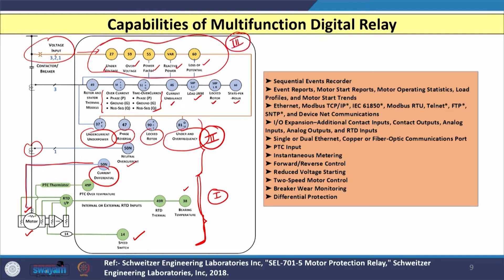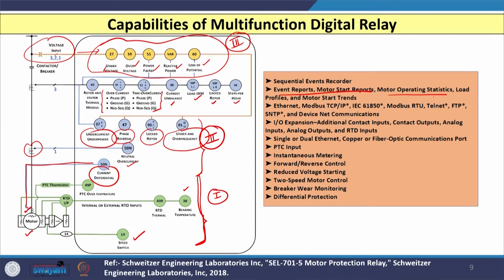For specific events like motor startup reports — starting current, acceleration type, operating statistics, load profiles, motor start trends — these features are also available in the digital relay. Along with that, the relay provides several communication protocols such as Ethernet, Modbus, TCP/IP, IEC 61850, FTP, and SNTP.